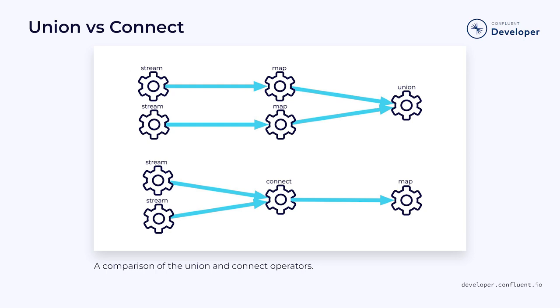On the surface, it might seem like union and connect can both be used to solve the same problem. The primary difference is whether you map the data to a new type before the operator or after. However, their intended use cases are actually quite different. For simple stateless operations, it's better to perform conversions to a unified type using techniques like map and then applying a union. Techniques such as coprocess are typically used in more complex operations where state must be maintained between the two streams during conversion. For example, implementing a join from two data streams into a single object would require something like a coprocess.